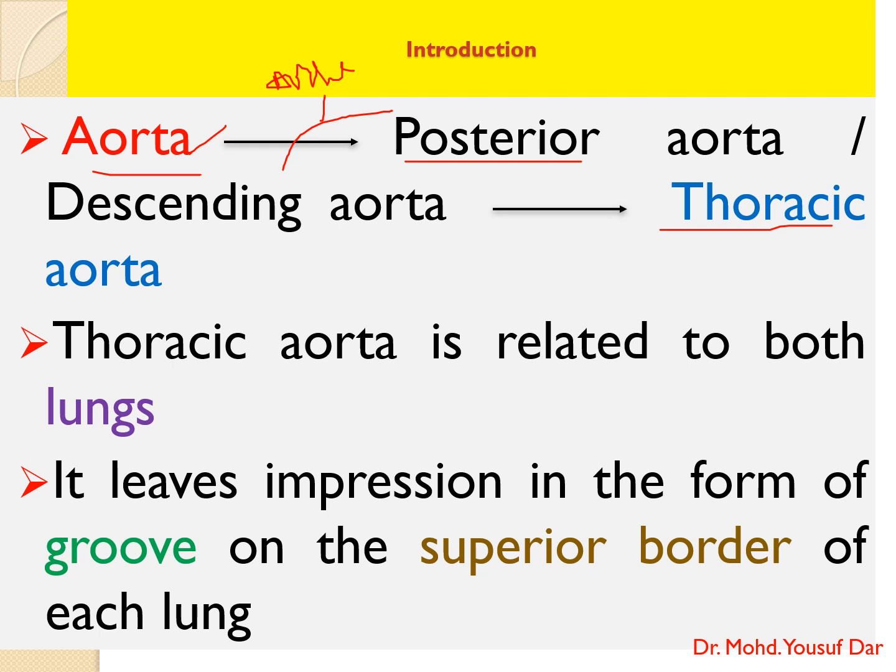The thoracic aorta is related to both lungs while passing through the posterior mediastinum, and it leaves impressions in the form of grooves on the superior border of each lung.